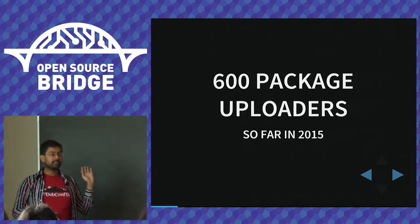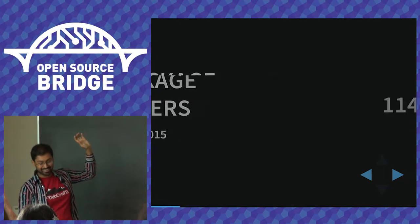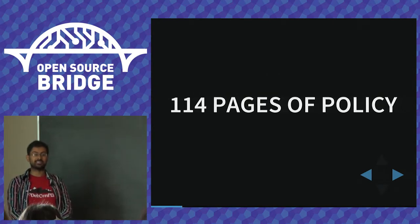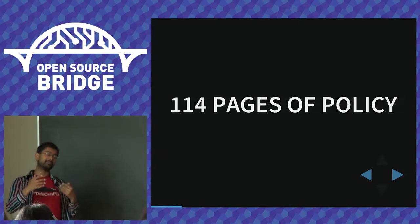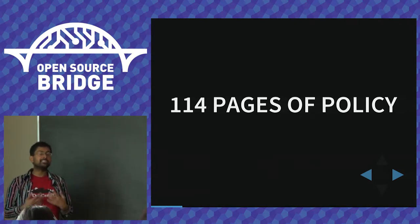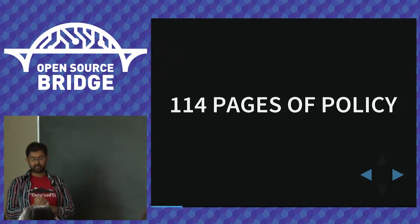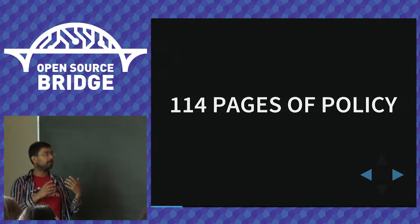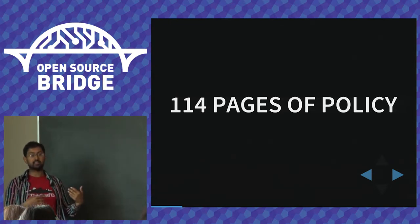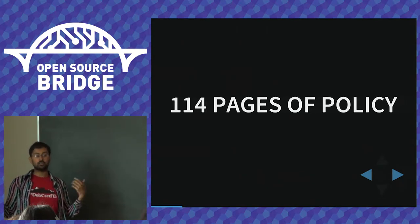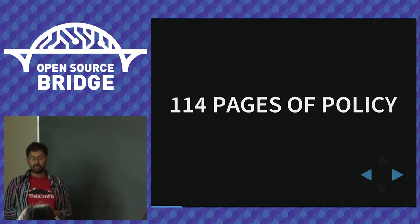These contributors are supported by a document called Debian policy, which is about 114 pages long. We don't write policy for the fun of it — we write it to minimize conflict. Having clear rules about what Debian package maintainers are allowed to do means maintainers can act independently without having to ask each other whether their work will conflict.